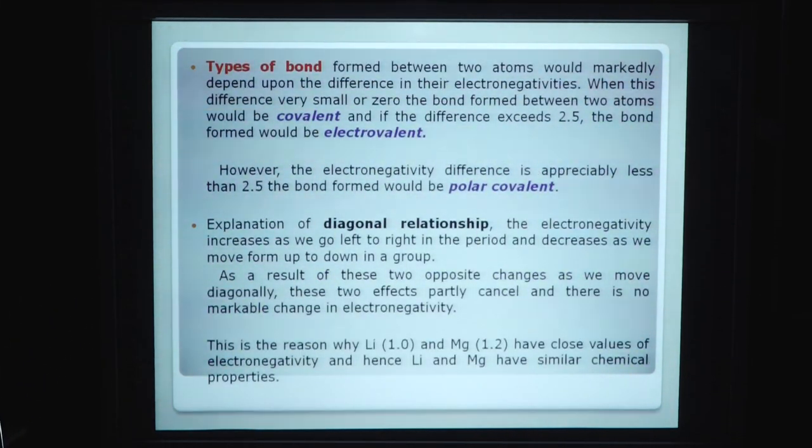Types of bond formed between two atoms would markedly depend on the difference in their electronegativity. When this difference is very small or zero, the bond formed between the atoms would be covalent. If electronegativity difference exceeds 2.5, the bond would be electrovalent. However, if electronegativity difference is appreciably less than 2.5, the bond formed would be polar covalent.